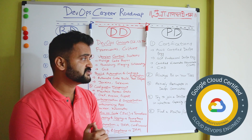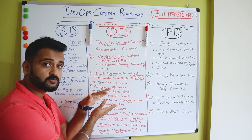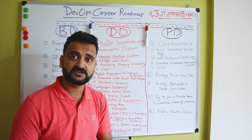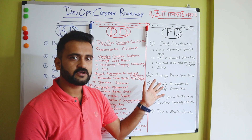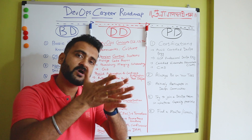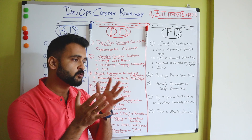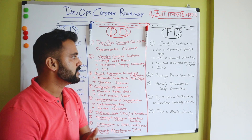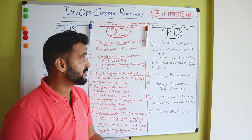AWS Certified DevOps Engineer and Google Cloud Professional DevOps Engineer are two major certifications. Certified Kubernetes Administrator (CKA) complements a DevOps engineer certification very well, and Certified Kubernetes Developer (CKD) is also a great certification. Your approach will vary based on your background: if you're coming from a support or infrastructure background you might find Kubernetes administration more interesting, while if you're from a developer background you might lean toward the developer path.